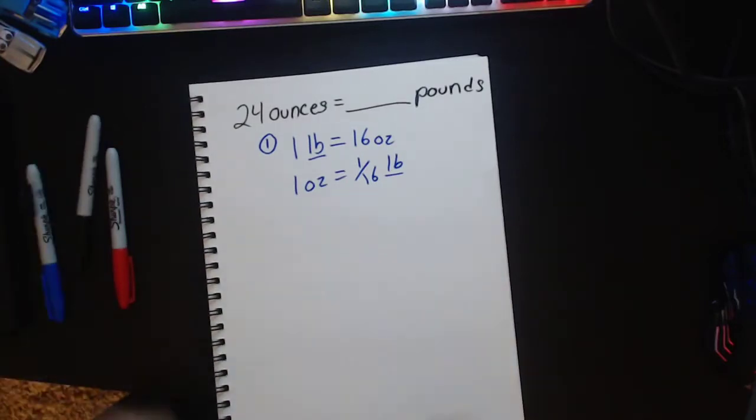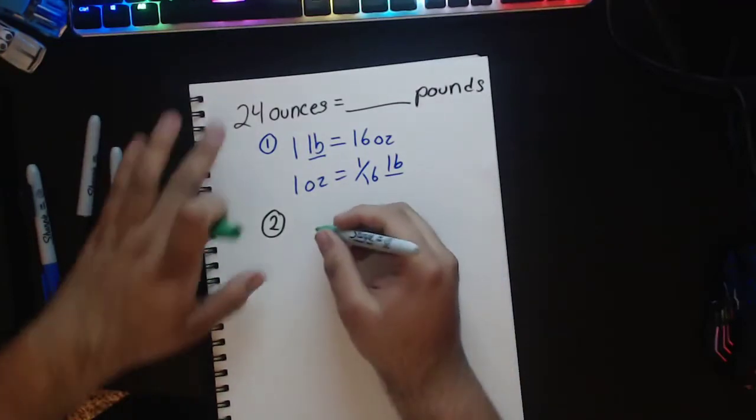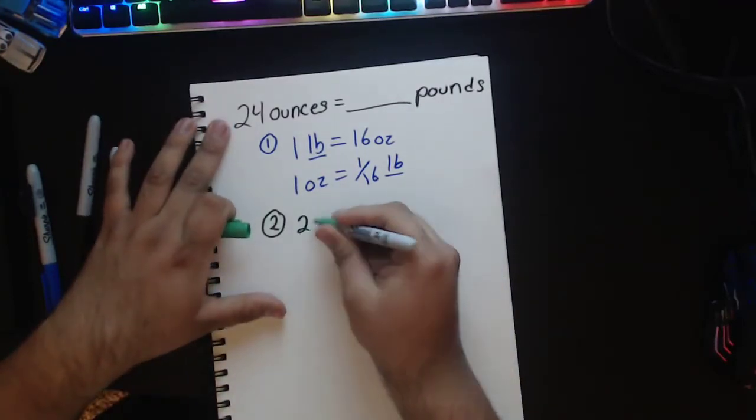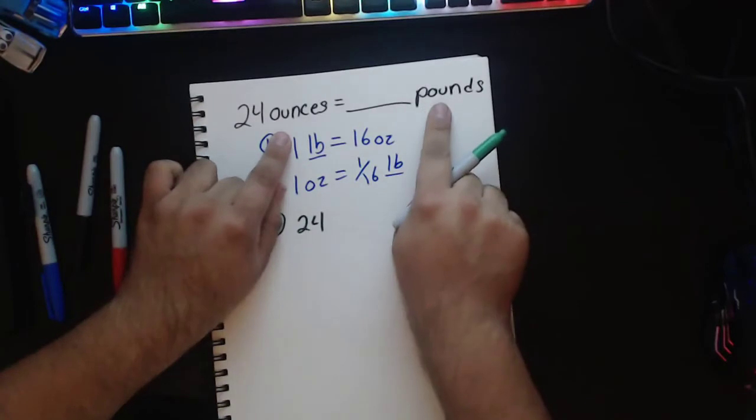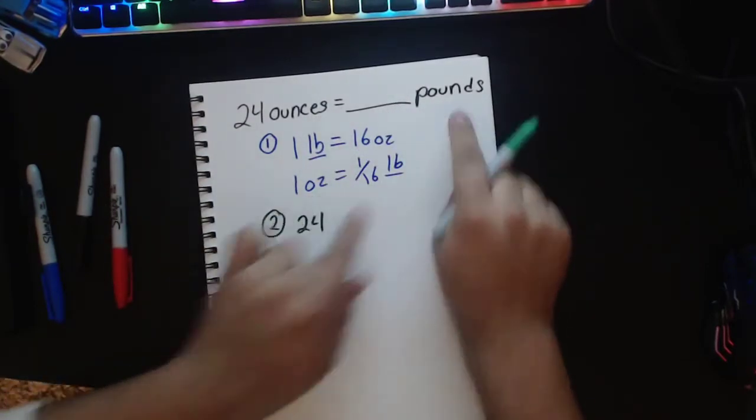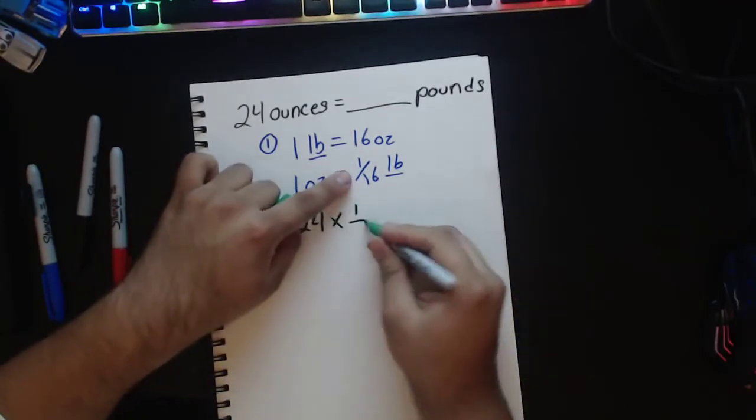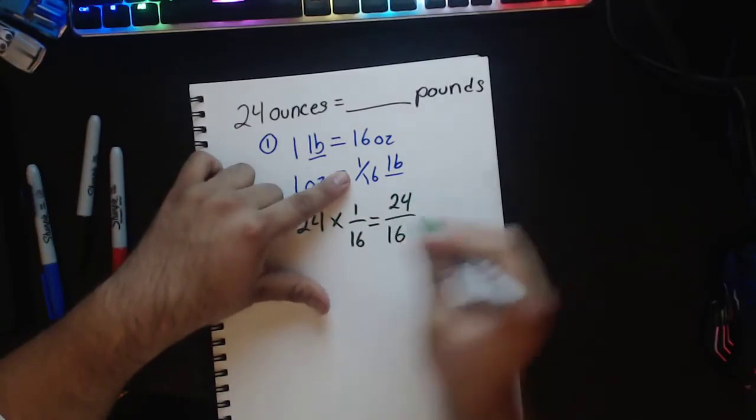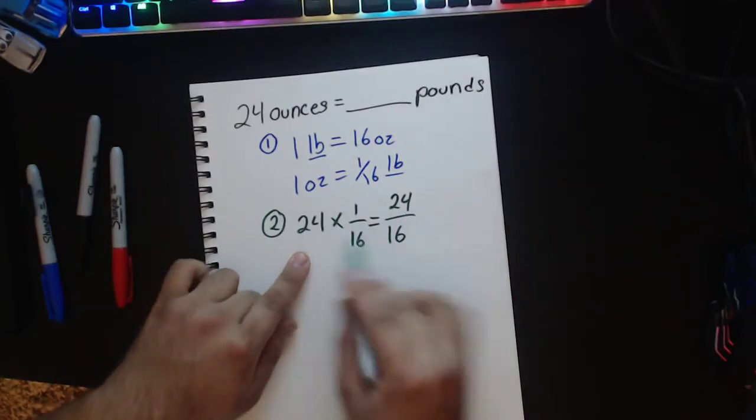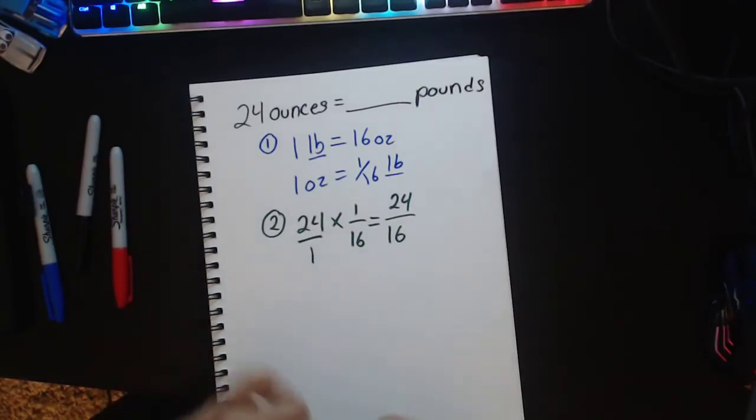Now my second step is to put all this information together. So I have 24 ounces. So I have 24 and I'm going to multiply it, not by this because we're not going from pounds to ounces, we're going ounces to pounds. So 24 times 1 sixteenth will give me 24 sixteenth because 24 times 1 is 24 and then 1 times 16 which gives us 16.